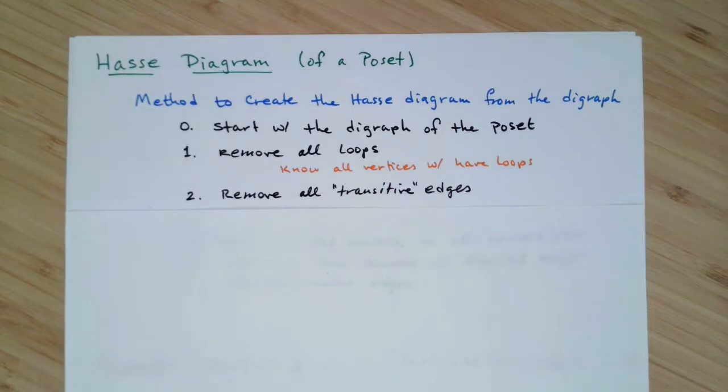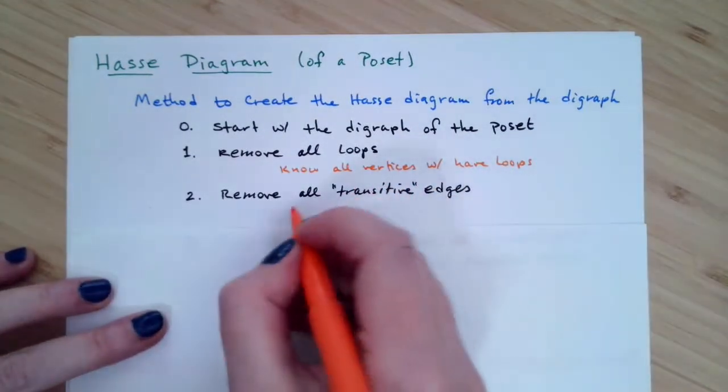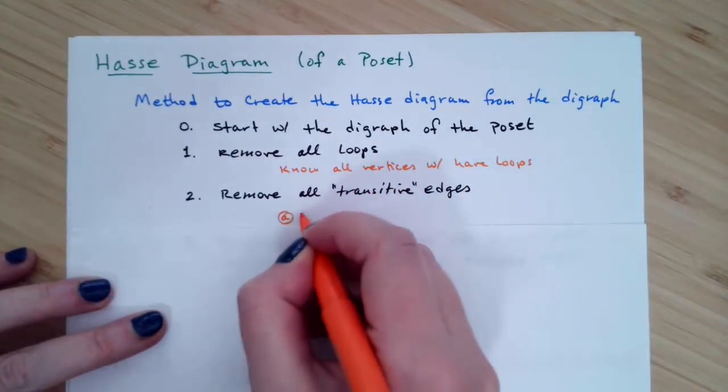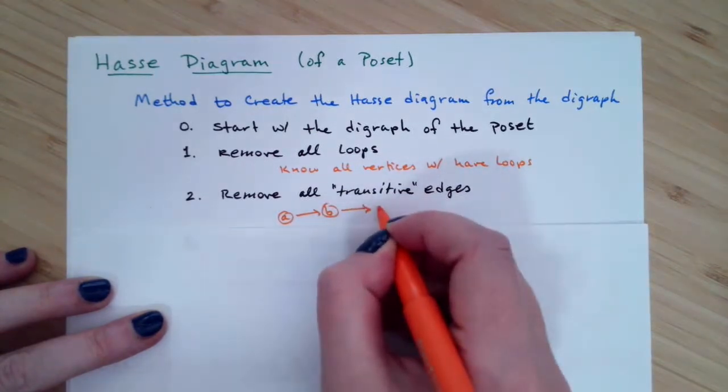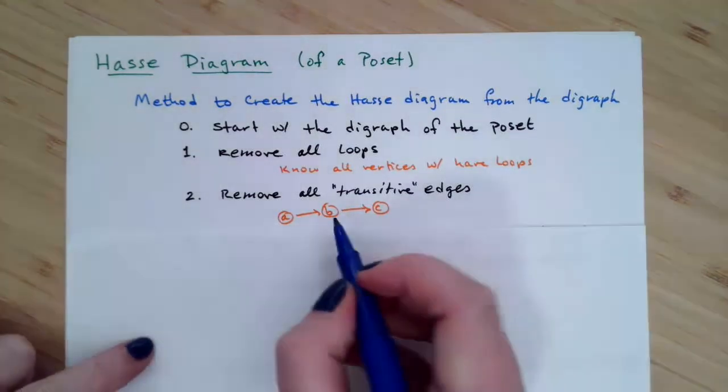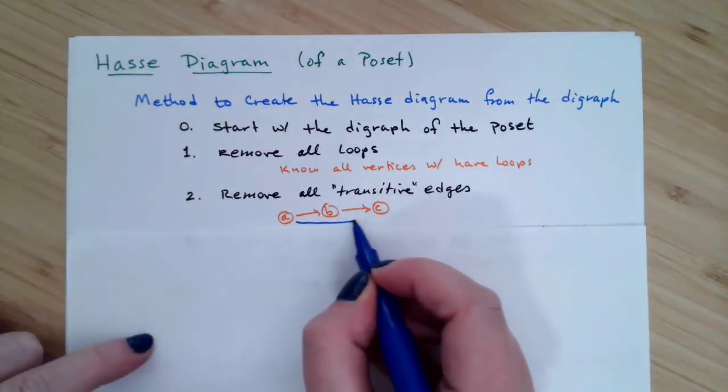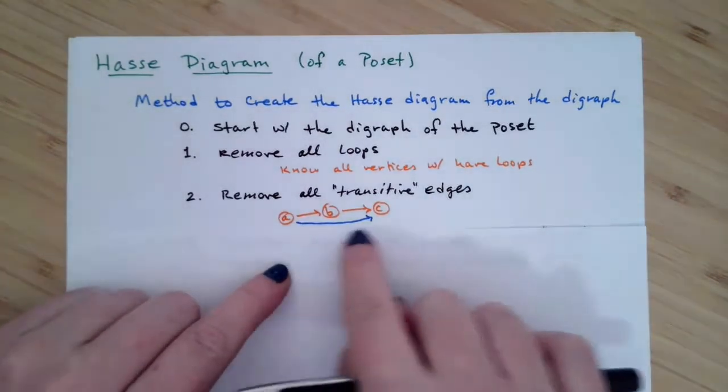Now step two, we're going to remove all of the transitive edges in the digraph, and here's what transitive edges are. If you have A is related to B and B is related to C in your digraph, and we know that we would have the transitive property holding because we are on a partial order, which means you're guaranteed to have this third relation, this third arrow right here that's A is related to C.